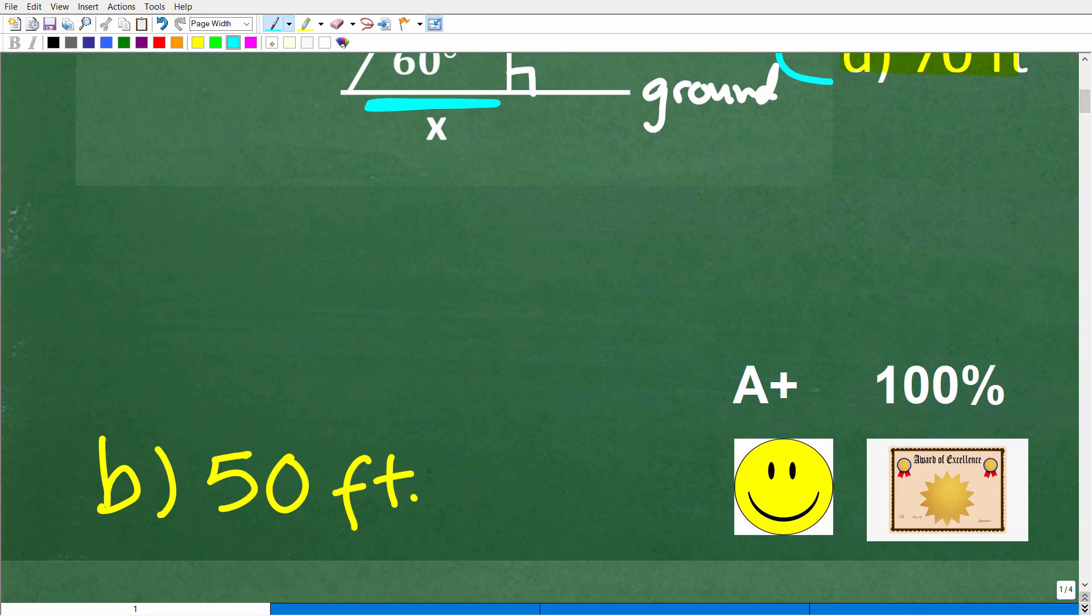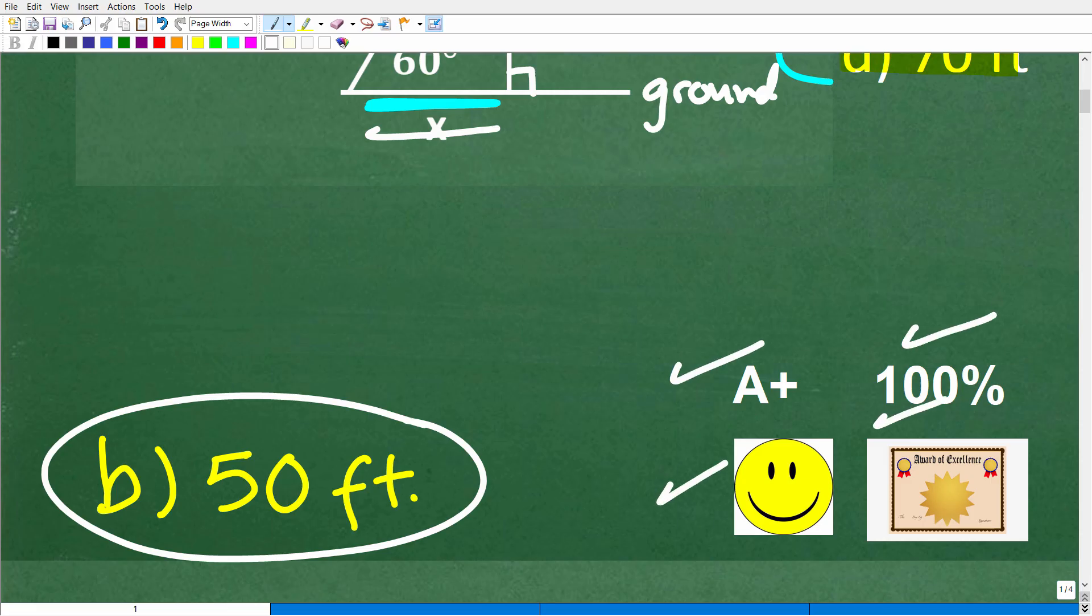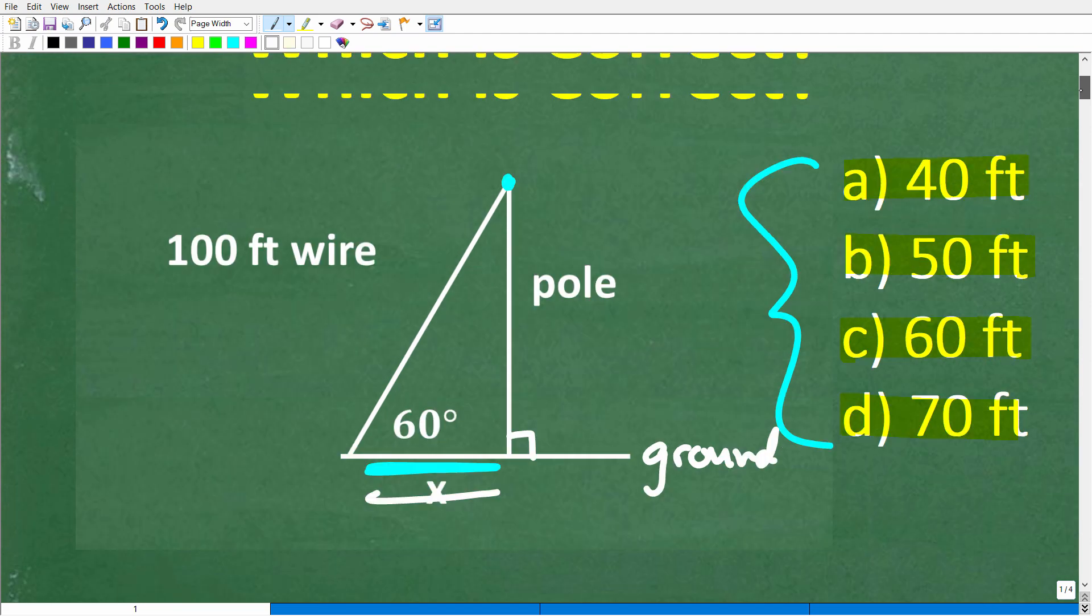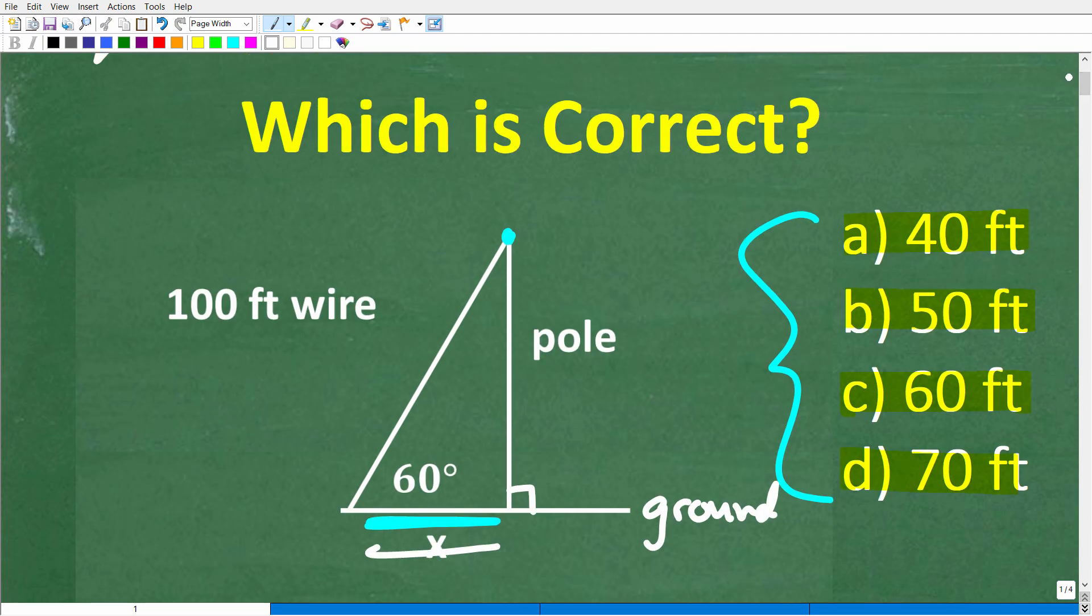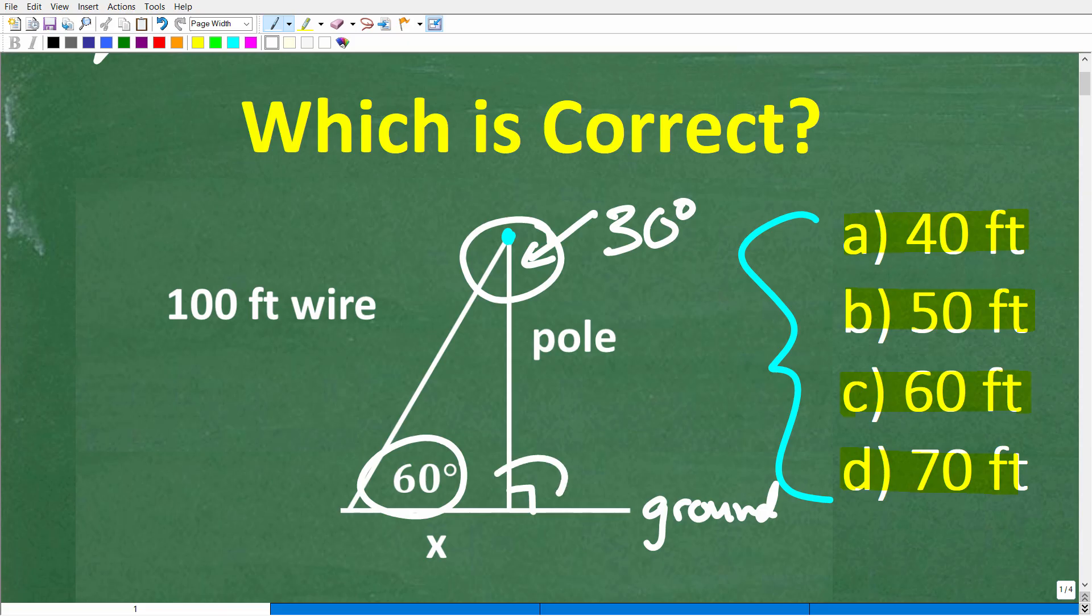The correct answer is B, 50 feet. That is the length right there. Now, if you got this right, well, you definitely deserve a happy face, an A plus, and 100%, and a certificate of excellence, because it's probably the case that you recognized that this was 60 degrees, and this angle right here is 30 degrees, and this angle, because I did say that this was perpendicular, is a 90 degree angle. So what we have here is what we call a special right triangle, a 30, 60, 90.